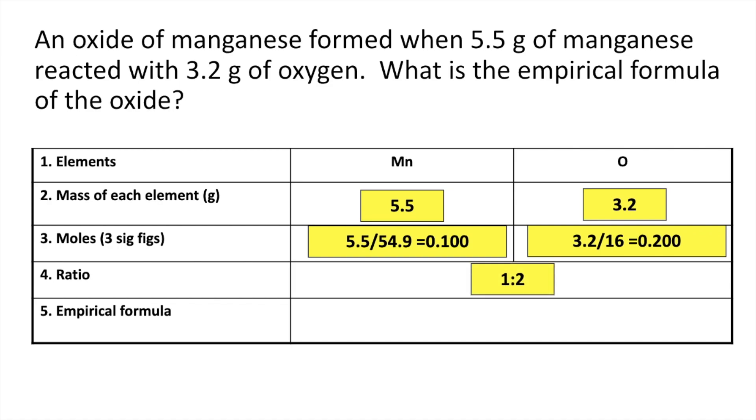So the ratio is obviously 1 to 2, so we divide both numbers by the smallest of the moles. That's an exact number so it's obvious that you don't need to round because you've got whole numbers anyway. So it's MnO2, the empirical formula for that. That's the simplest whole number ratio of each type of atom in the compound.